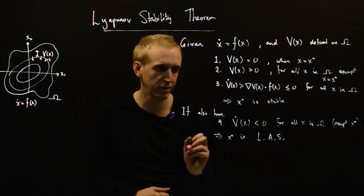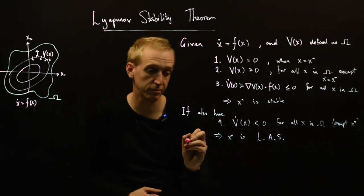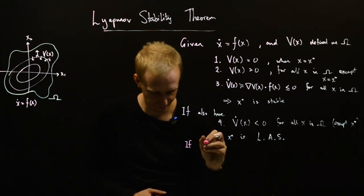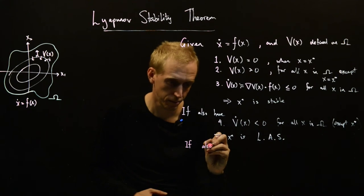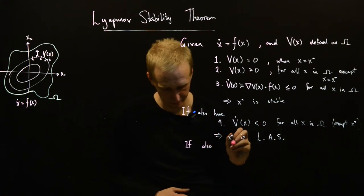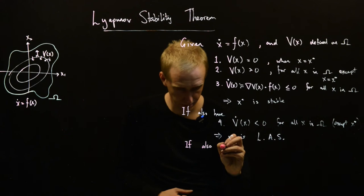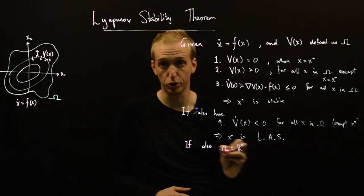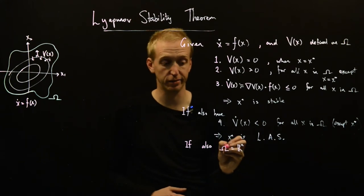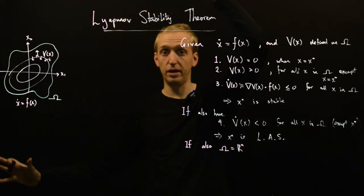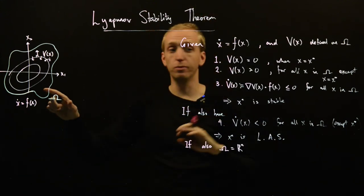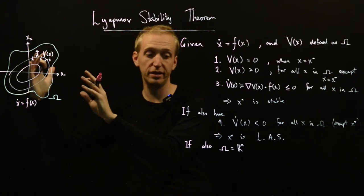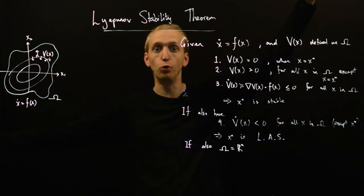And then finally, we also have the extension to globally asymptotically stable. So if also omega is equal to R^n. And this is just fancy language for saying that our region omega is the entire state space. So all of this, omega had to be some bounded region of the state space. We're now going to look at global extent.